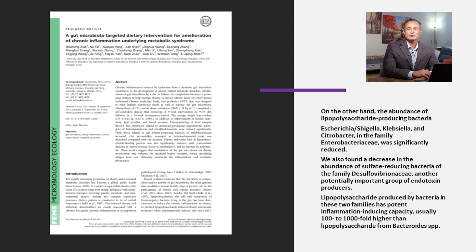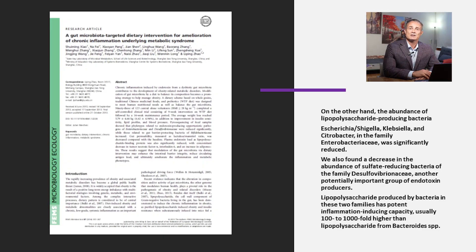However, you have to put it into perspective. There are many gram-negative bacteria — E. coli, for example, is another. E. coli is a known opportunistic pathogen. It has been shown that the LPS from E. coli is 100 to 1,000 times more pro-inflammatory than that from Bacteroides. So your body can handle much higher levels of Bacteroides than E. coli.